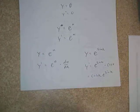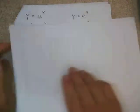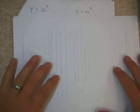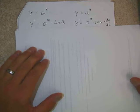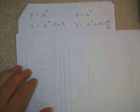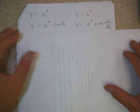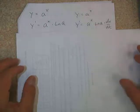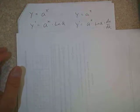We might ask: if e to the x is its own derivative, is that true for all exponential functions? What about 2 to the x or 3 to the x? The answer is no, but it's close. The rule for a general exponential function a to the x is that the derivative is a to the x times the natural log of a. In chain rule form, it's a to the u times natural log of a times du/dx. This is a rule we need to have memorized.